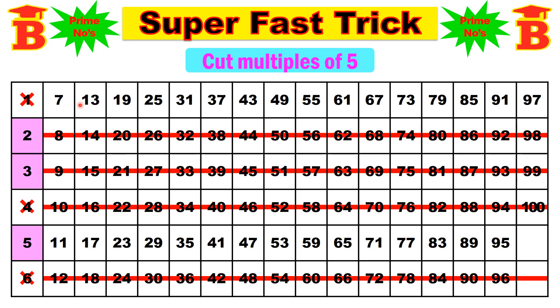In those 2 remaining rows — the 1st row and the 5th row — we have to cut the multiples of 5. The numbers ending with 5 are multiples of 5. So see the numbers 25, 55, and 85 in one row, and 35, 65, and 95 in the other. Just cross these numbers: 25, 55, 85, 35, 65, and 95.